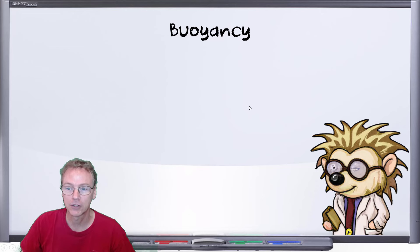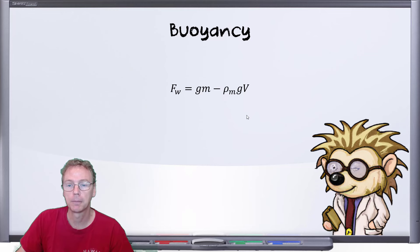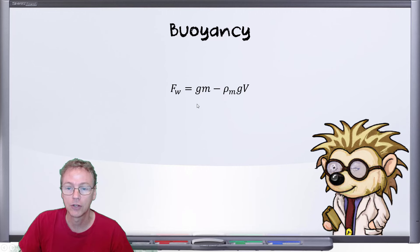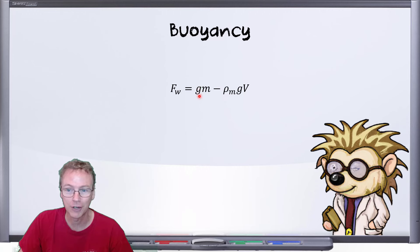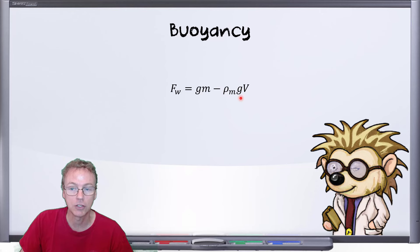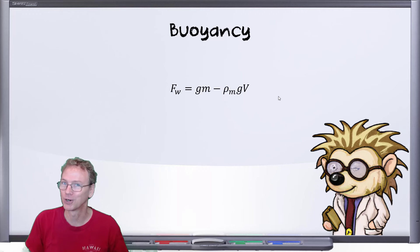Let's clarify what buoyancy is and what we all agree on. The net force acting on a submerged object can be summarized as the standard weight of the object — where G is the local acceleration due to gravity and M is the mass of the object — plus a buoyancy term. The buoyancy term is the density of the medium multiplied by the local acceleration due to gravity and the volume displaced by the submerged object. I think we can all agree that's fine.